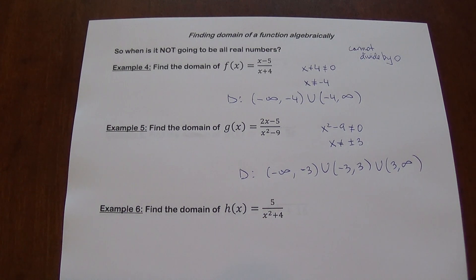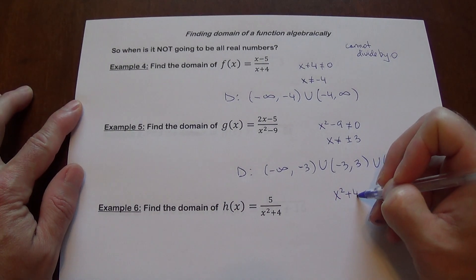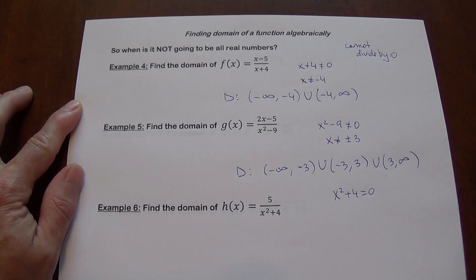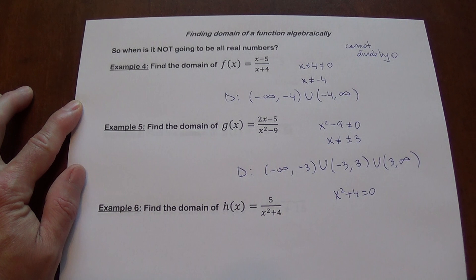Example 6. I want to take a good look at this. It's a common mistake. So x squared plus 4 is what we have in the denominator. We're looking for real values that could possibly make the denominator zero. And if you set x squared plus 4 equal to zero, this equation does not have any real solutions. It does have some complex solutions, but we're not interested. We're interested in real solutions.